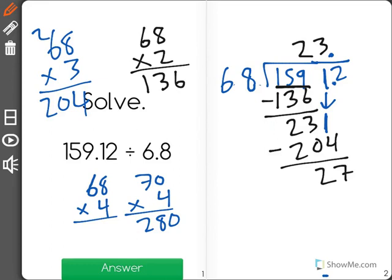Last but not least, I find my remainder there, which would be 27, and I bring down our last digit, which is a 2. And now I'm going to try 68 times 4, because 70 times 4 was just below 280.